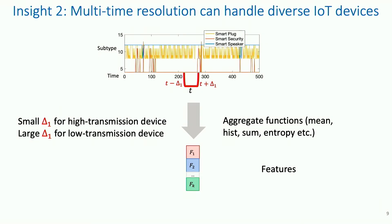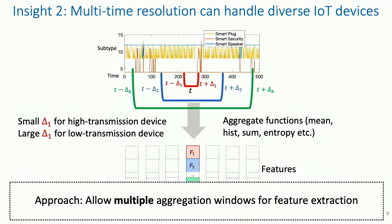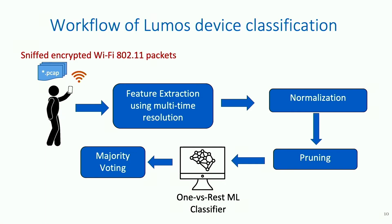So instead of handcrafting this delta, we propose a set of multiple aggregate windows. A feature at time t is then the combination of aggregate functions applied to each of these aggregate windows. Our pipeline works as follows: users walk around the room sniffing encrypted Wi-Fi 802.11 packets. We first build features using our multi-time resolution algorithm, then normalize them due to their wide variance, and do initial pruning to remove correlated features or values that don't change at all. We then train a one-versus-rest machine learning classifier, which also helps with our class imbalance dataset — we have many more training samples from a camera than from a smart bulb. Each classifier can also pick its own set of relevant features. We make a prediction at every time t and do a majority voting in the end.